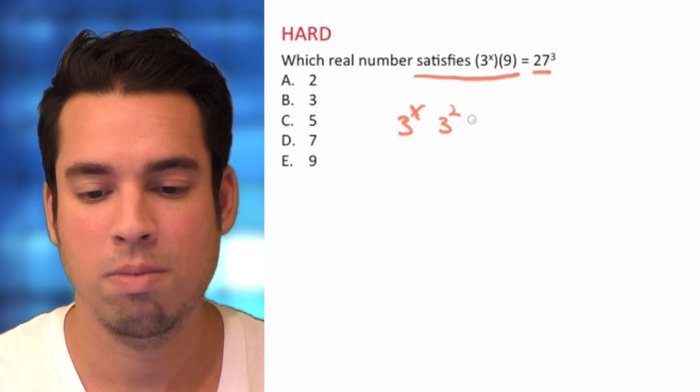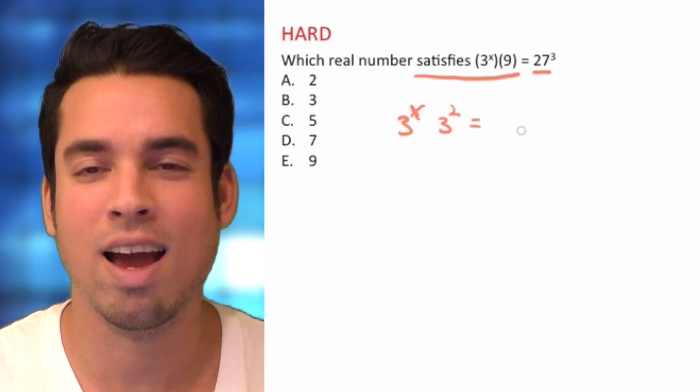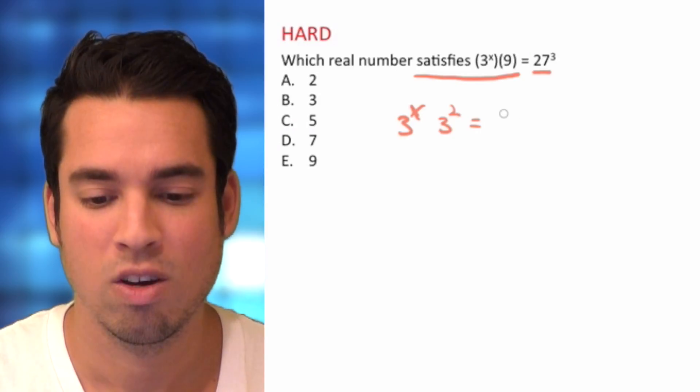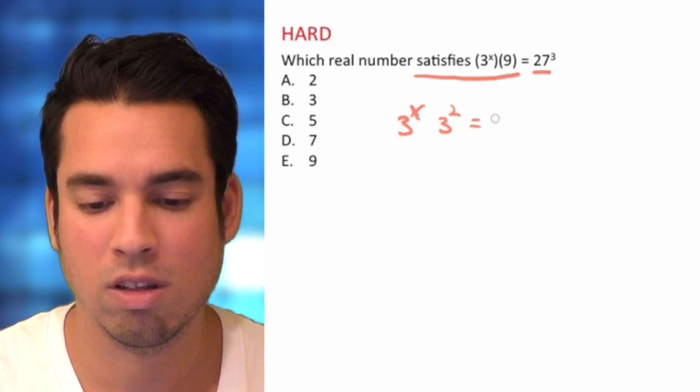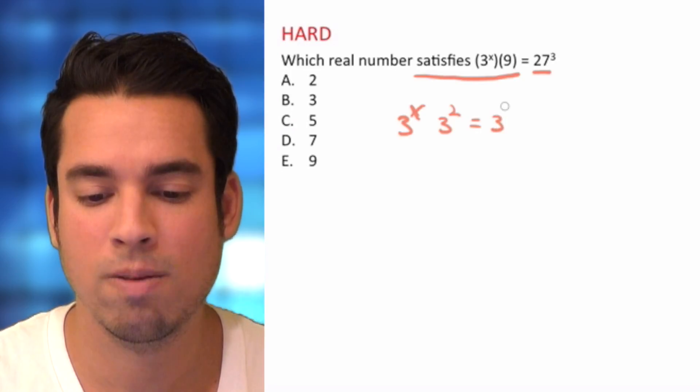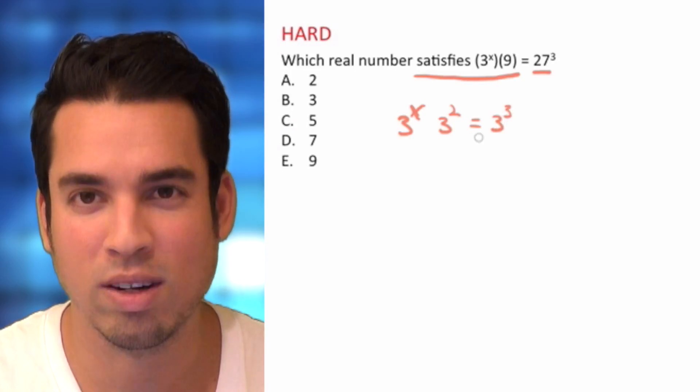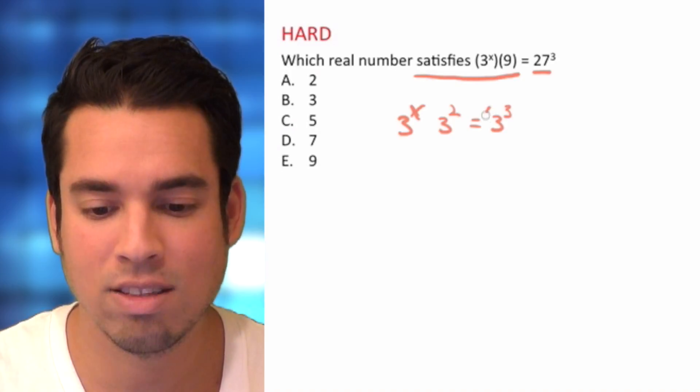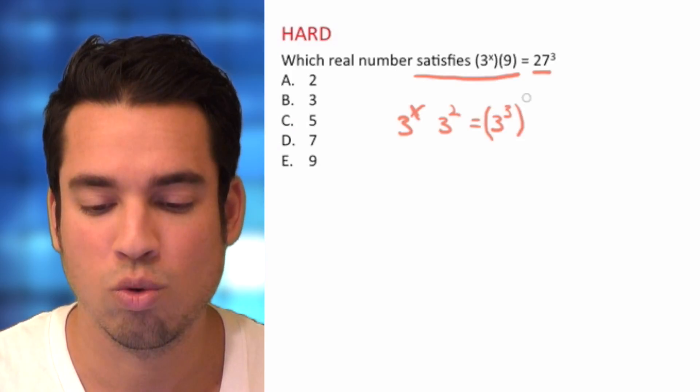What about 27? 27 is actually 3 cubed. Okay, so if we up here have 27 to the third power, we can say 3 to the third power, which is 27, and that whole thing to the third power.